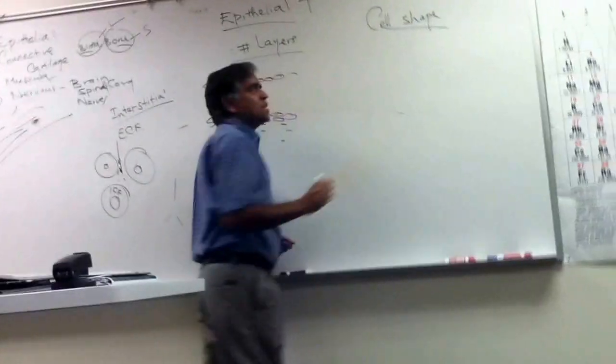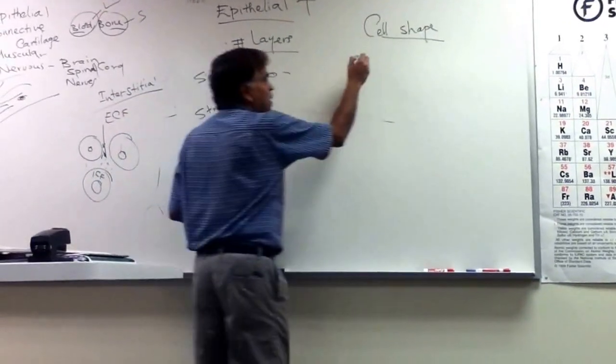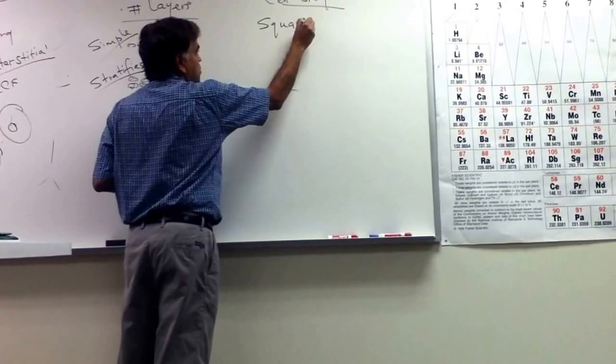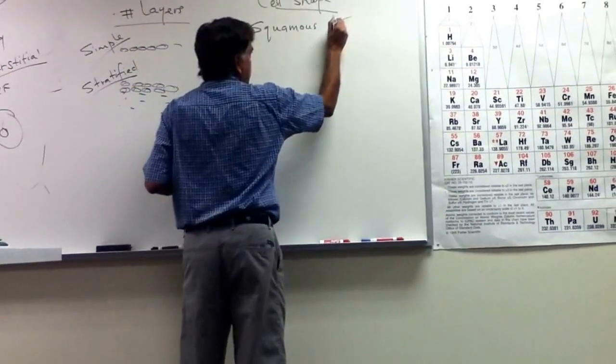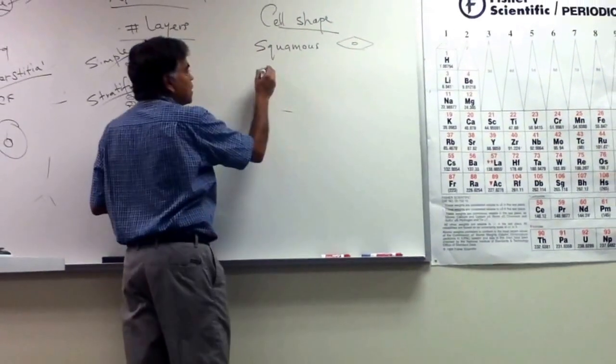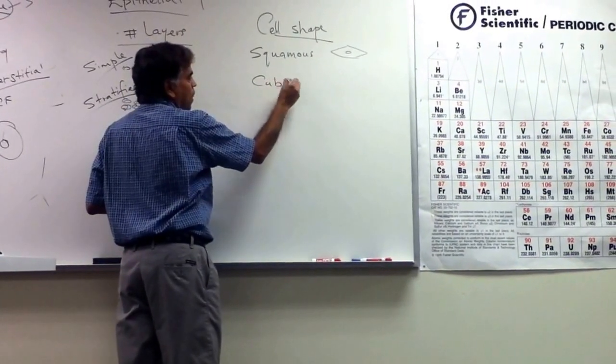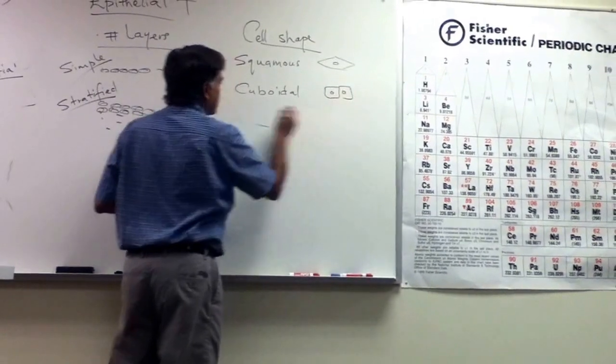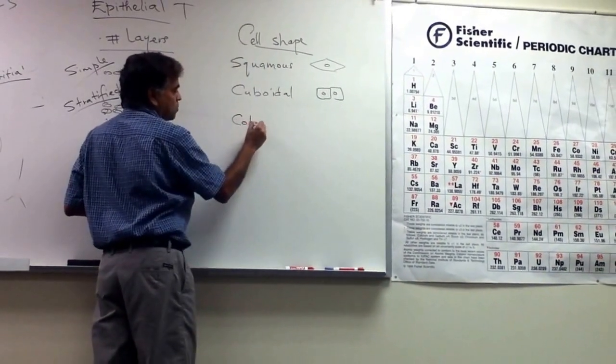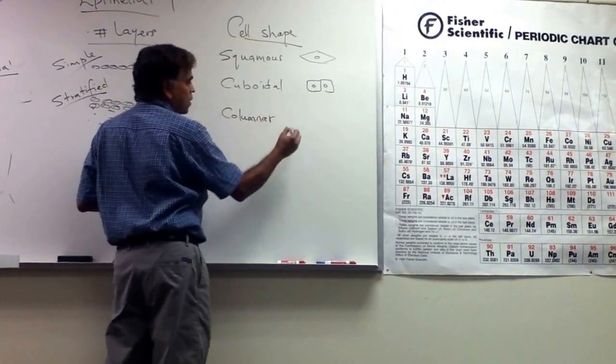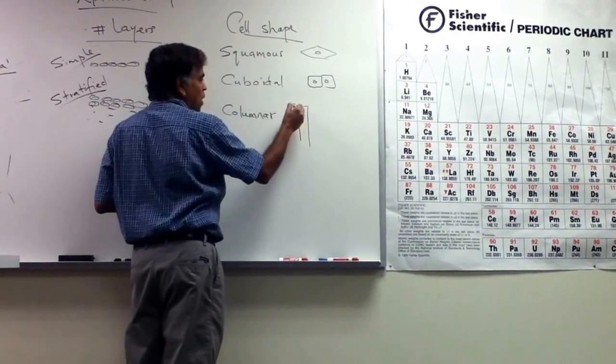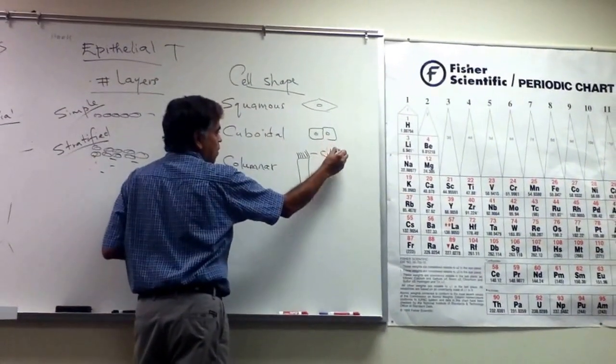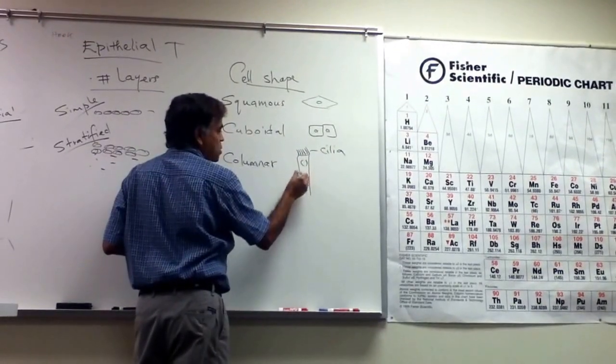So based on the cell shape, it can be squamous. These cells look kind of flat, something like this. Or cuboidal, where it looks like cube. Or columnar, where the cells are tall like columns. And they have some hairs, which they call cilia. And this is your nucleus.